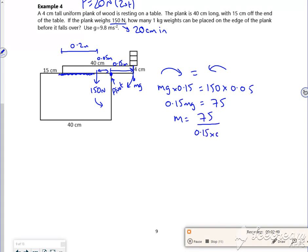And then the g is 9.8, isn't it? So m will be 75 over 0.15 times g, which I put my calculator on. So g is 9.8, isn't it? So g is 9.8.